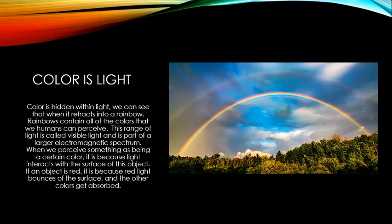When we perceive something as a certain color, it's because light interacts with the surface of an object. If an object is red, red light bounces off the surface and other colors get absorbed. Objects have pigments, and those pigments interact with light, absorbing some wavelengths and reflecting others — the reflected light is the color we see.